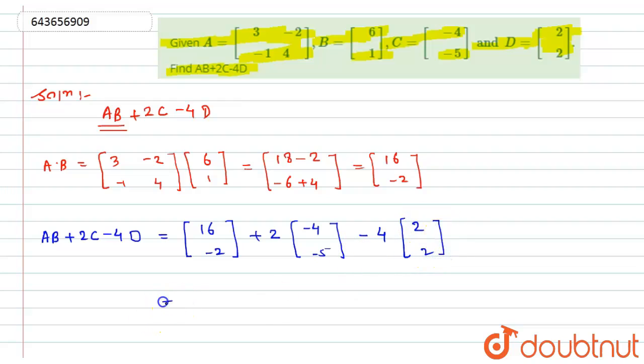Now according to the matrix multiplication, I simply multiply this 2 inside and 4 inside. So it will become [16; -2] + [-8; -10] - [8; 8].